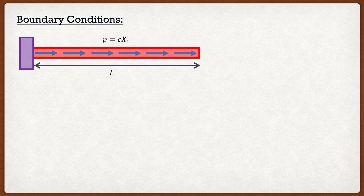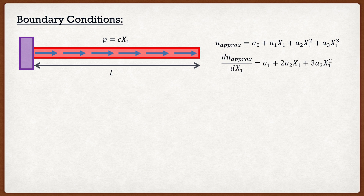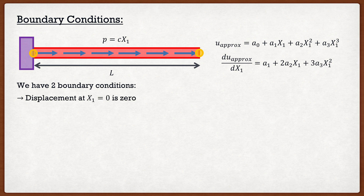Let's go into the first step of our actual problem. We have our beam distributed loaded by c times x1, and our approximate solution is as follows. I'm going to take the derivative of our approximation function, which equals a1 plus 2 times a2*x1 plus 3 times a3*x1 squared. Now the first step is to satisfy the boundary conditions. Since the beam is fixed on the left, the displacement at x1 equal to zero must be equal to zero. Therefore a0 is equal to zero.